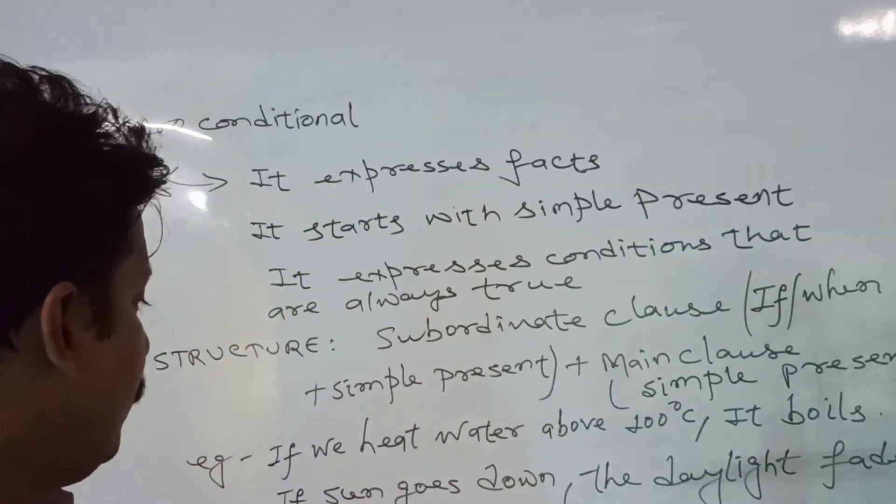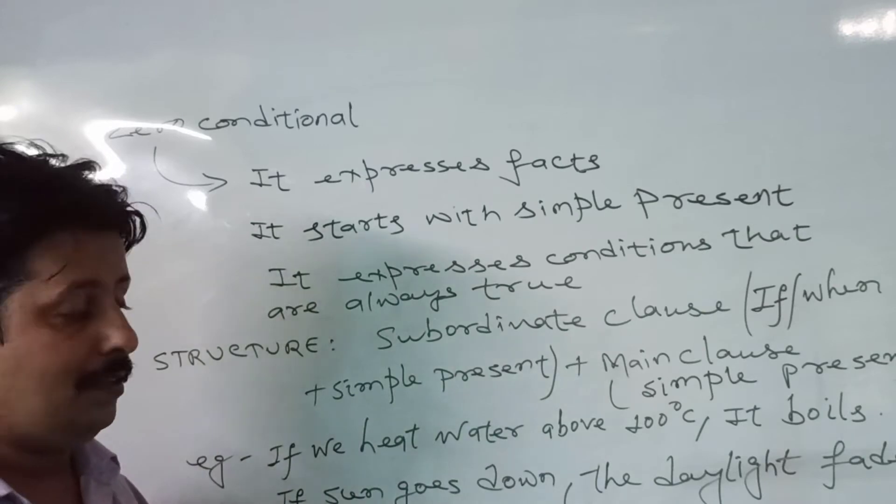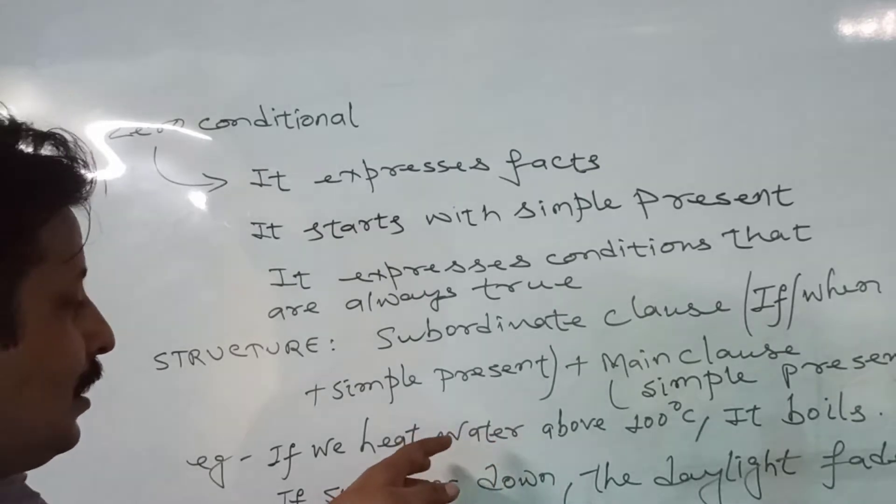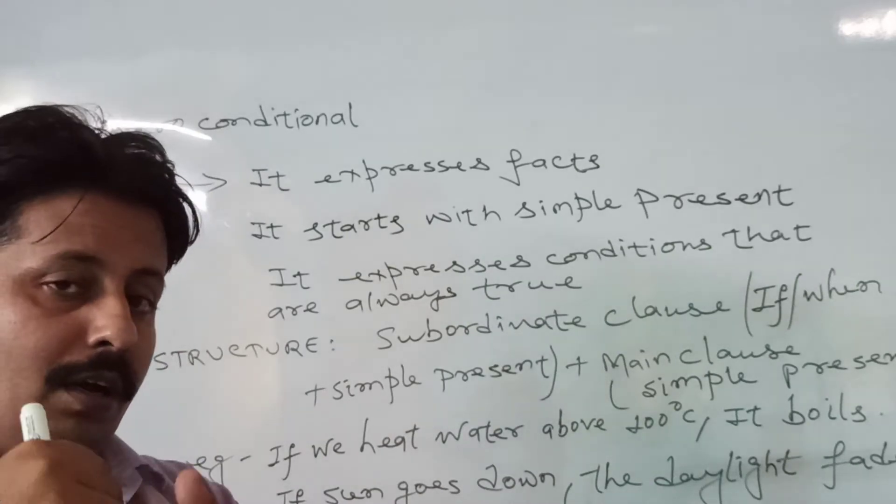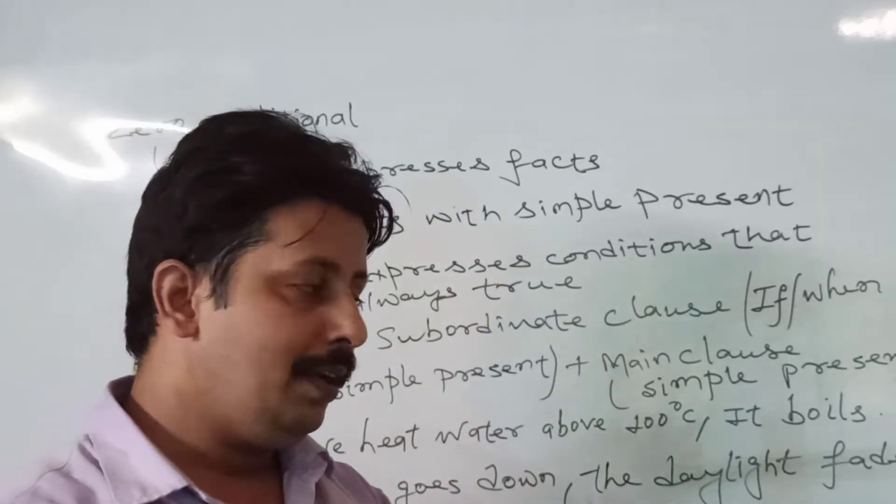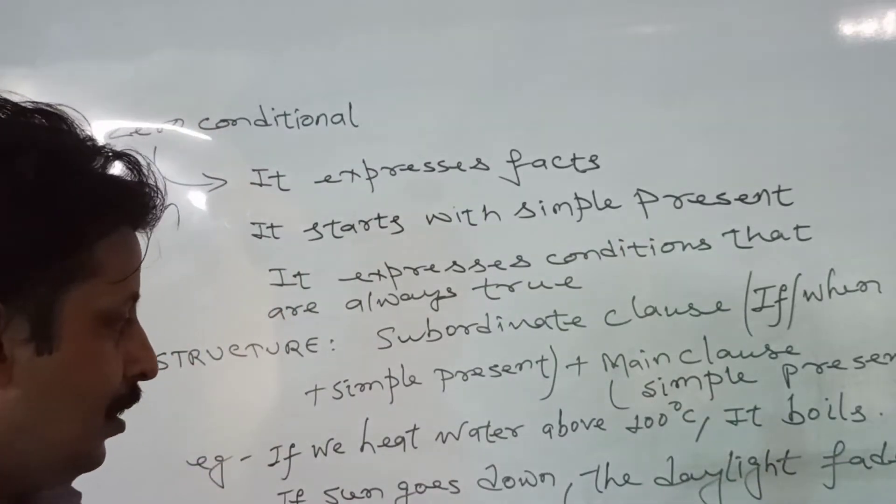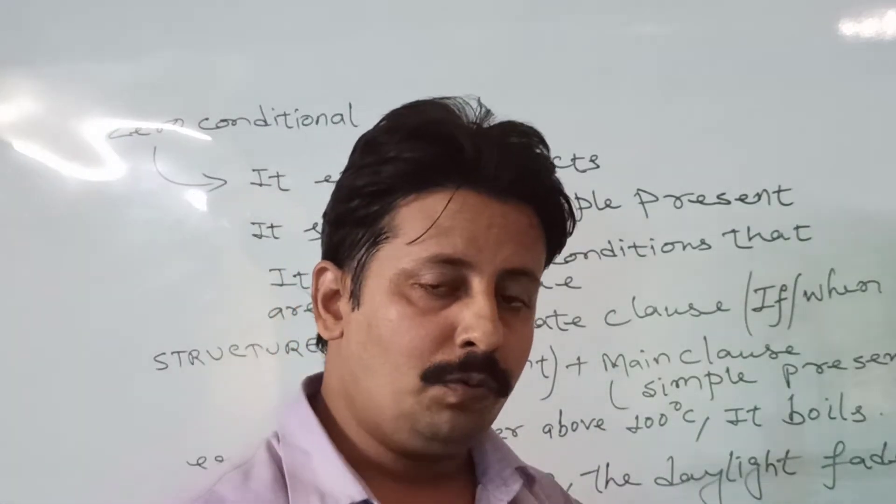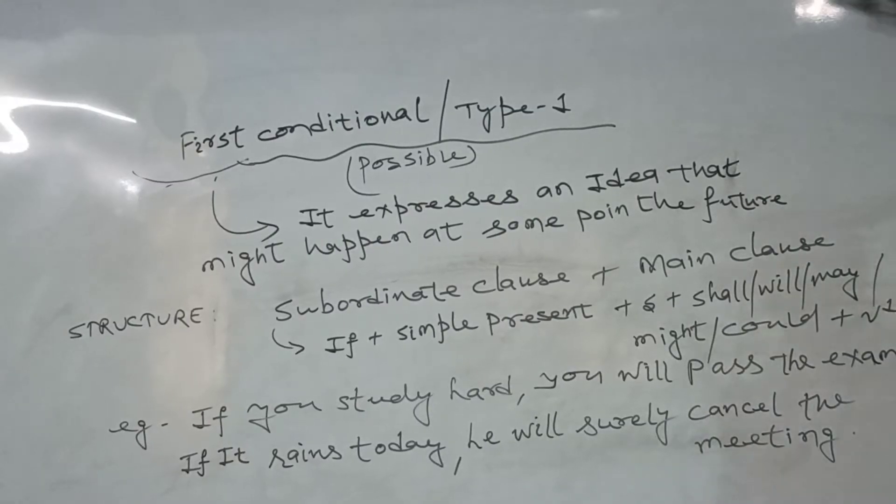And then in main clause you will see that will be also in simple present. See now with the example you can understand: If we heat water above 100 degrees Celsius, it boils. Both parts contain simple present here, and it also gives a fact that whenever we heat the water above 100 degrees Celsius surely it boils. When the sun goes down, the daylight fades. This is zero conditional - that is the type zero conditional.